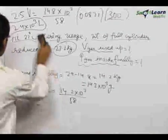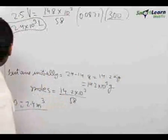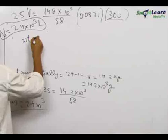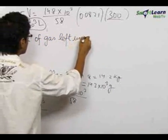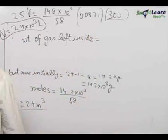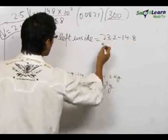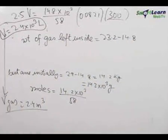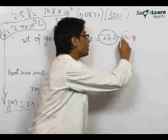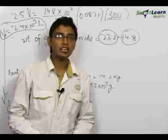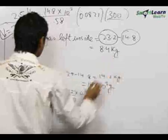Even after usage, the volume of the cylinder remains constant. We can find the weight of gas left inside the cylinder after use: 23.2 minus 14.8. Here 23.2 was the weight of the full cylinder after use and 14.8 is the weight of the empty cylinder. This comes out to be 8.4 kilograms.